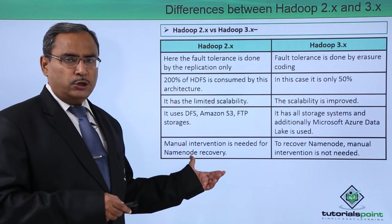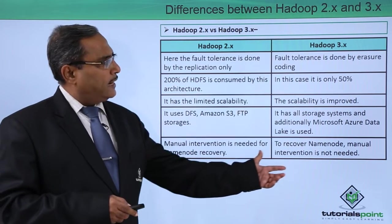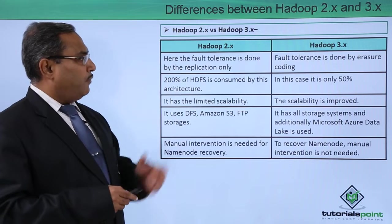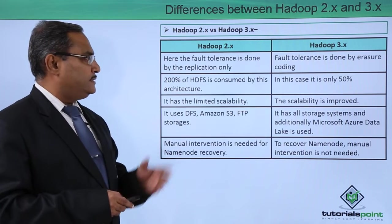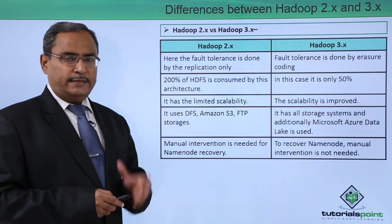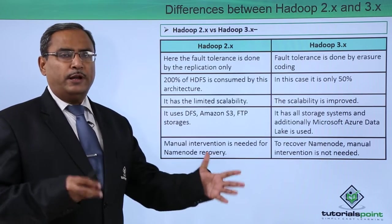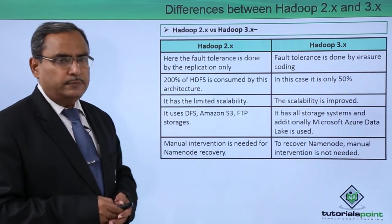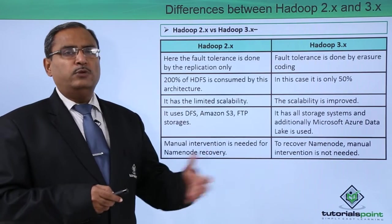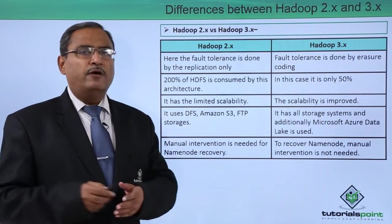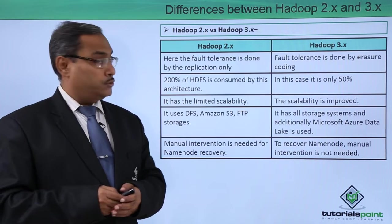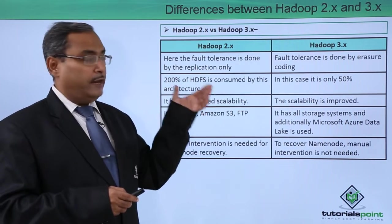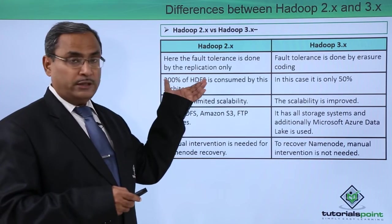In Hadoop 2.x, fault tolerance is done by replication only — the same data is replicated onto multiple nodes. Whenever we have a failure in one of the nodes, we can retrieve data from the other nodes. That replication method is the failure recovery method in Hadoop 2.x.